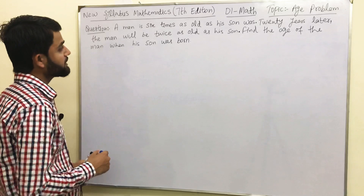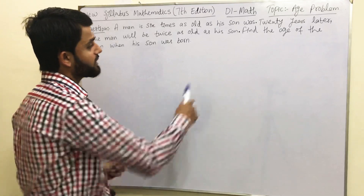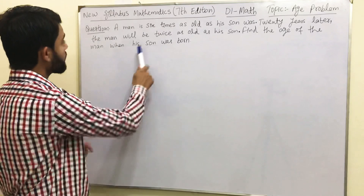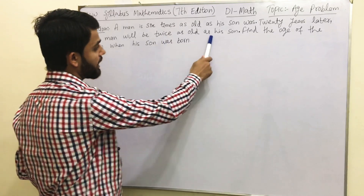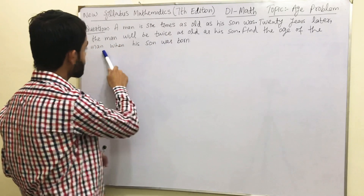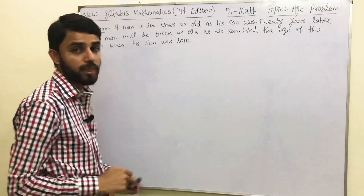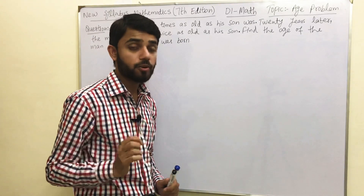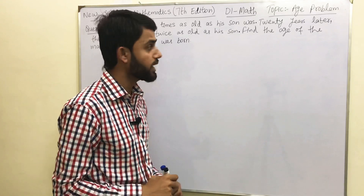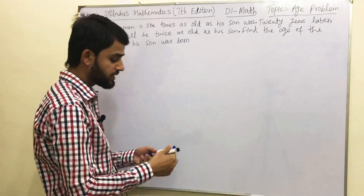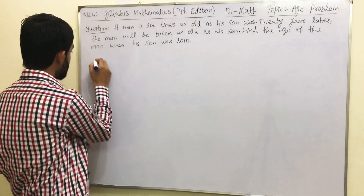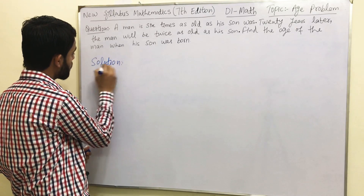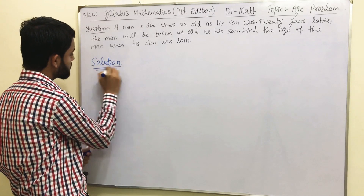Here is the main problem: a man is 6 times as old as his son. 20 years later, the man will be twice as old as his son. Find the age of the man when his son was born. You should have your copy and pen with you and note down every single step so that next time you are solving an age problem, you are no more confused.